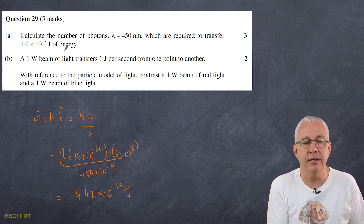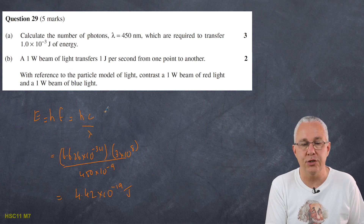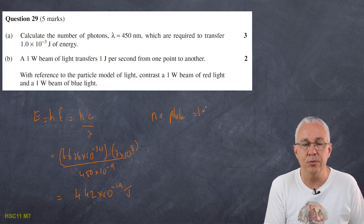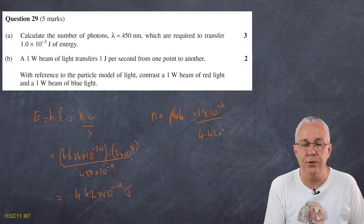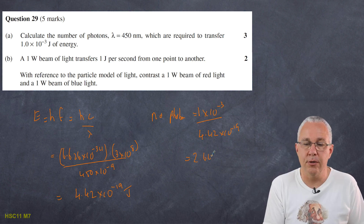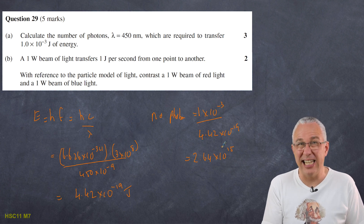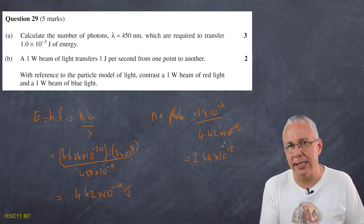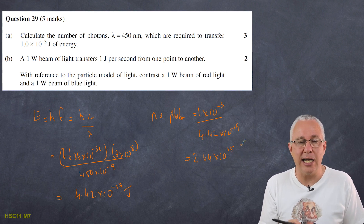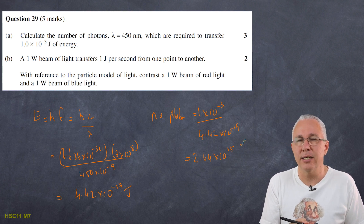We're given a total energy of 1×10⁻³ joules. The number of photons is simply the total energy divided by the energy per photon: 1×10⁻³ divided by 4.42×10⁻¹⁹, giving 2.64×10¹⁵ photons. That must be a whole number, rounded to three significant figures.